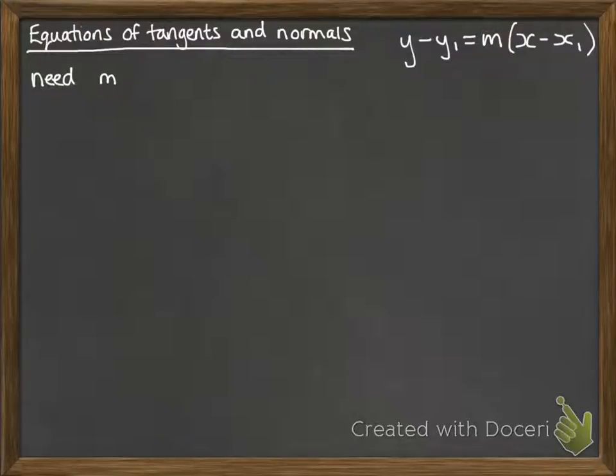We need to be able to work out m, which is the gradient, and we also need a coordinate. Then we'll be able to use our y minus y₁ equals m times x minus x₁ formula.